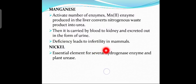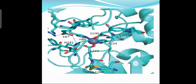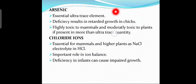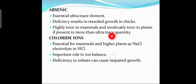Deficiency of manganese leads to infertility in mammals. The next element is nickel. Nickel is also an essential element used for several hydrogenase enzymes and plant urease. Arsenic is another ultra trace element. Its deficiency results in retarded growth in chicks. It is highly toxic to mammals and moderately toxic to plants if present in more than ultra trace quantity.